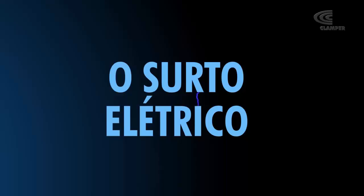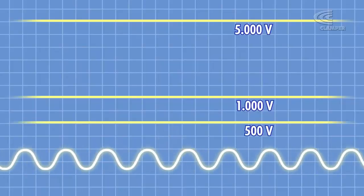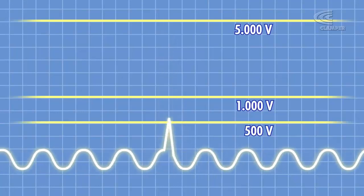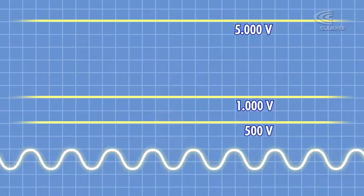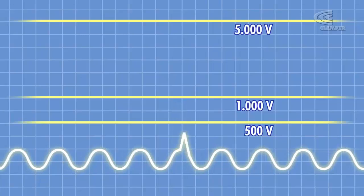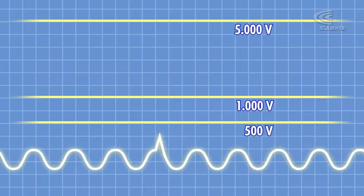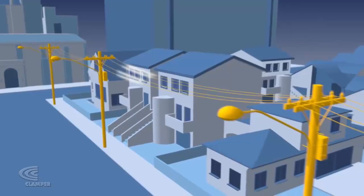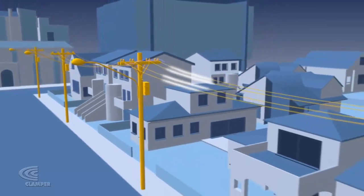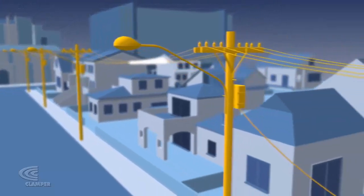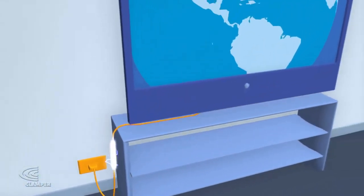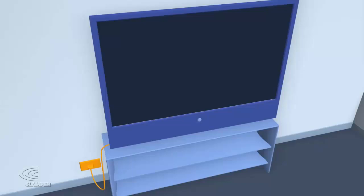Surto elétrico é um distúrbio cotidiano na rede elétrica que, sem a correta proteção, reduz a vida útil, danifica e queima seus bens eletrônicos e eletrodomésticos. Diariamente, ocorrem sobretensões na rede elétrica que elevam a voltagem para 500, 1000 ou mais de 5000 volts. Esta sobretensão, chamada de surto elétrico, é conduzida, atingindo todos os equipamentos conectados a esta rede.